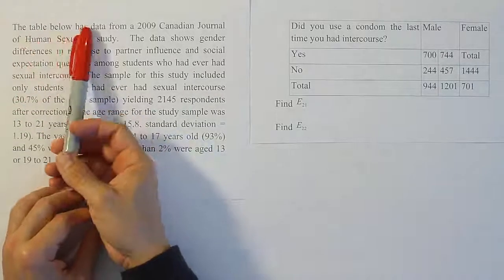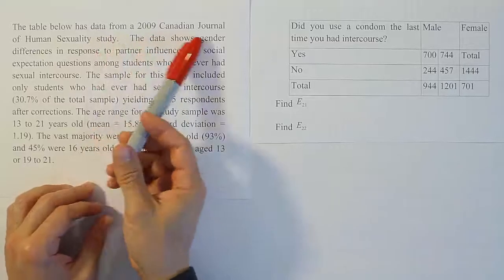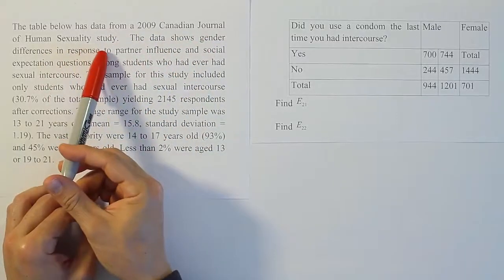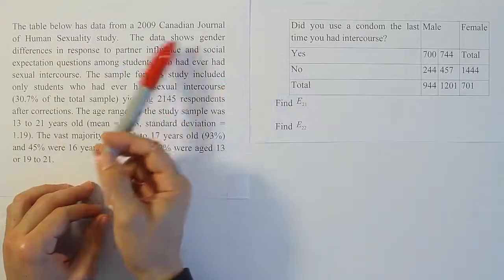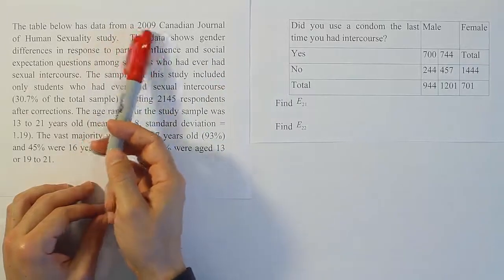This is an interesting set of data that we're going to be working with, this 2009 Canadian Journal of Human Sexuality study. So it talks about this table of data, but we'll have several tables of data that come from this study.